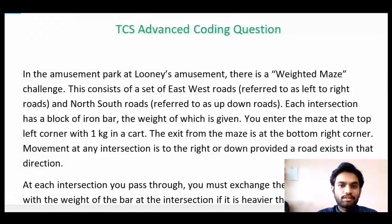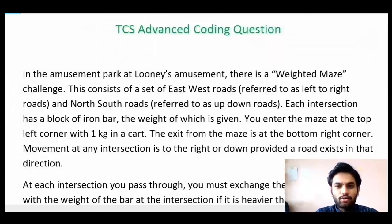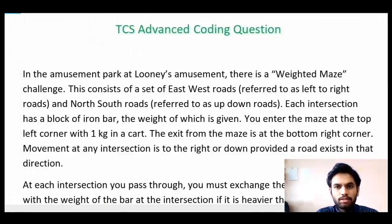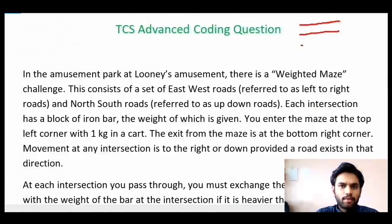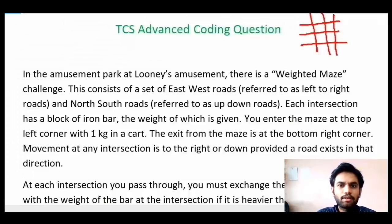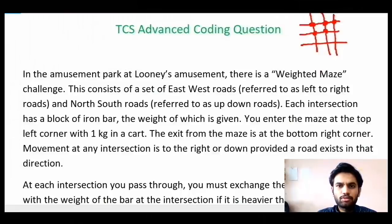The problem statement is quite big, I will just quickly glance through it. There is an amusement park in which there is a weighted maze challenge. This consists of a set of east-west roads (left-right) and north-south roads (up-down). Each intersection has a block of iron bar, the weight of which is given. The maze has some horizontal roads and some vertical roads, and at every intersection there will be some iron bar whose weight is given.